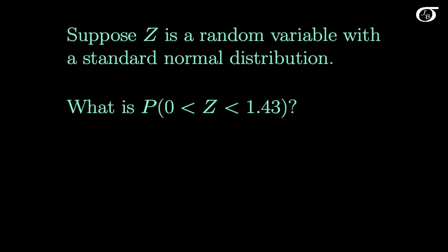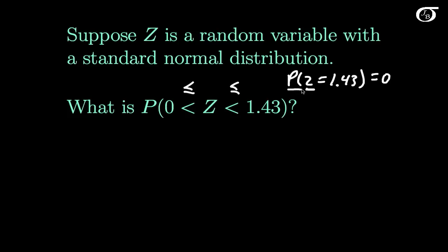Suppose z is a random variable with a standard normal distribution. What is the probability that z lies between 0 and 1.43? Note that the answer would be the same with less than or equal to signs, because z is a continuous random variable and the probability that it equals any exact constant like 1.43 is 0. So it doesn't matter whether we use strict or non-strict inequalities.